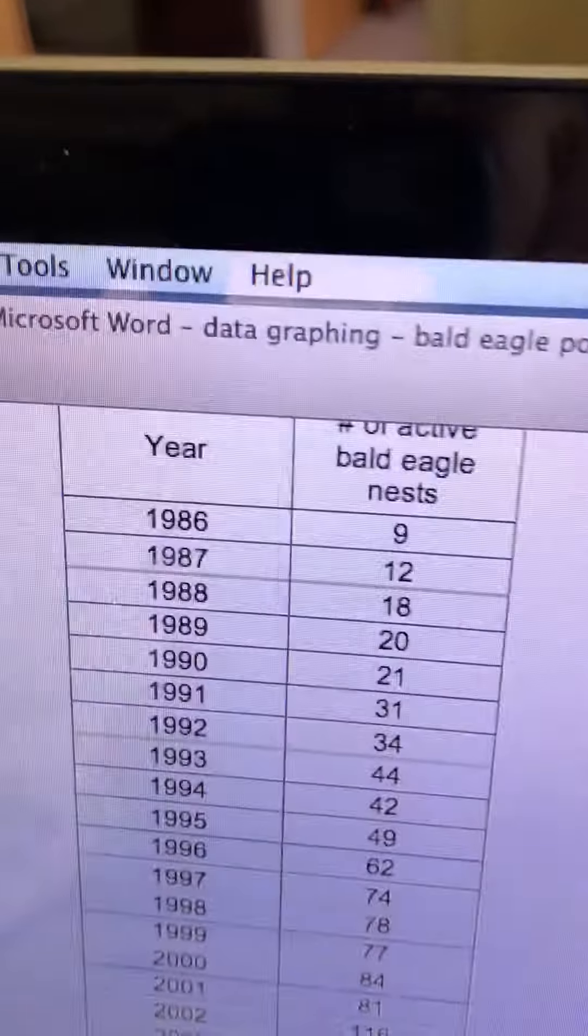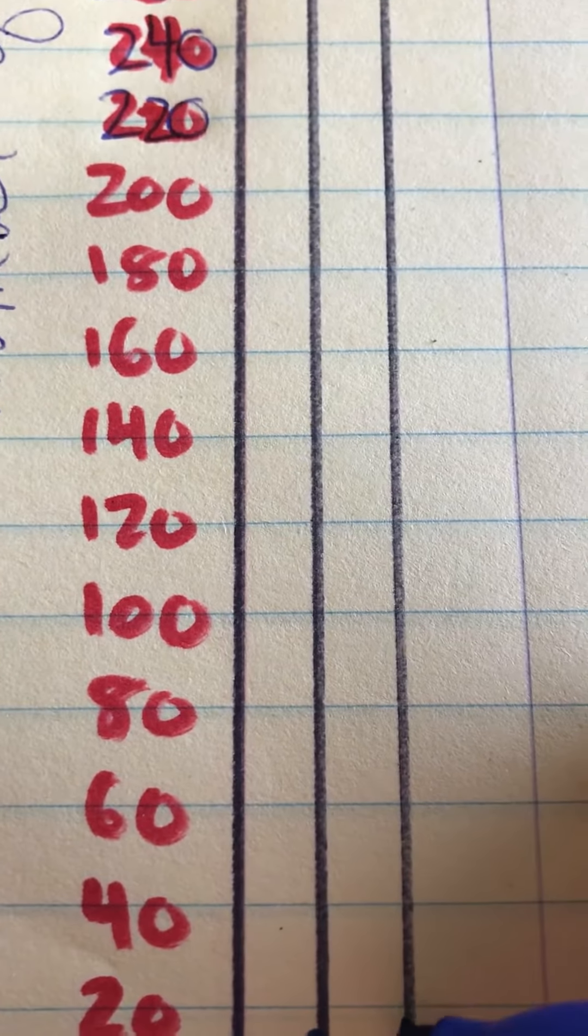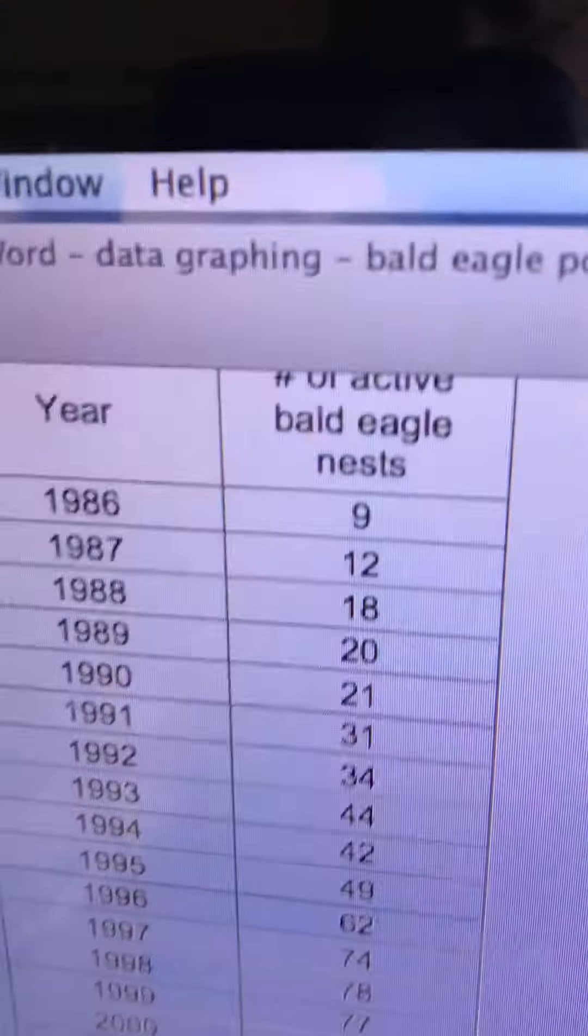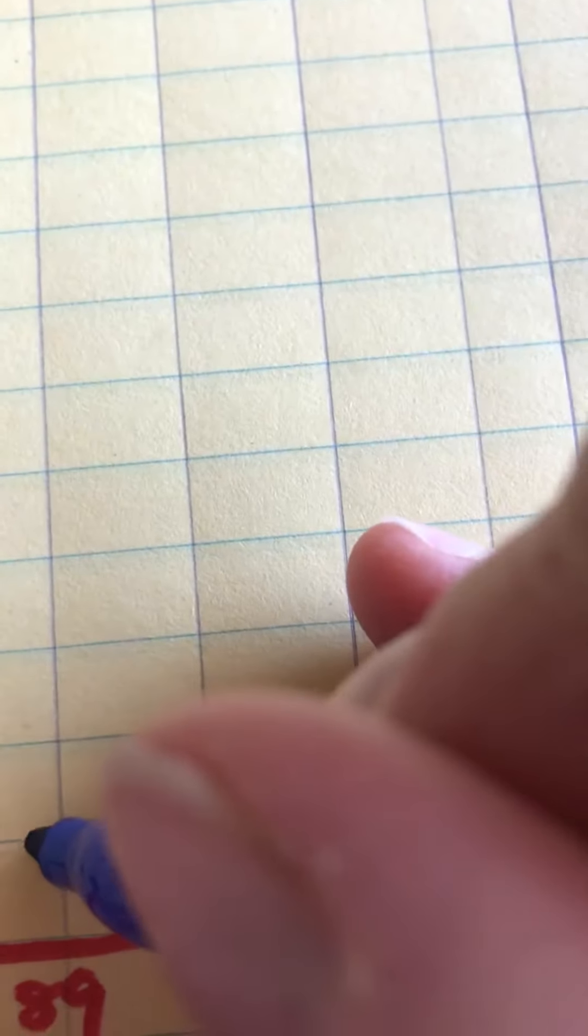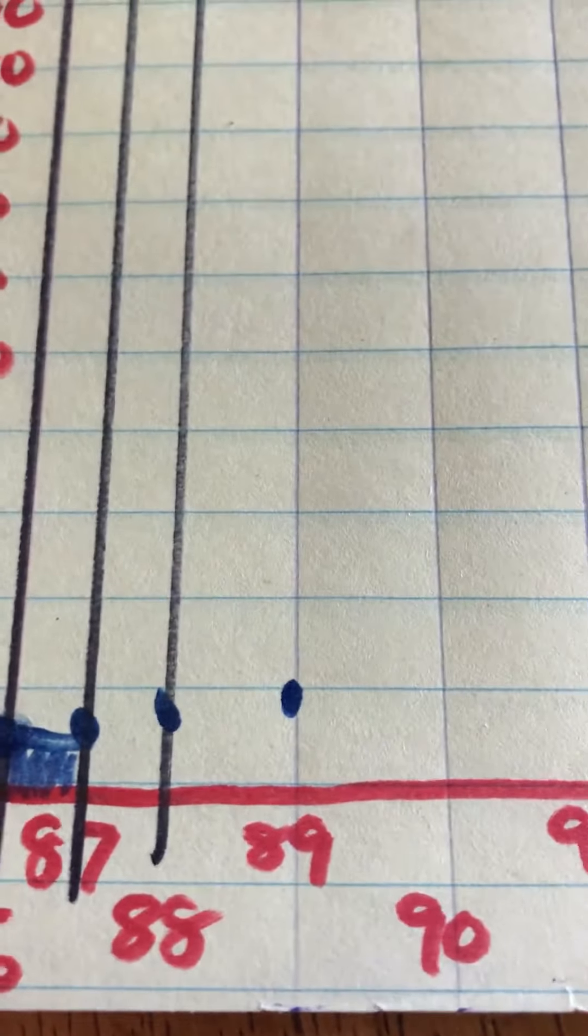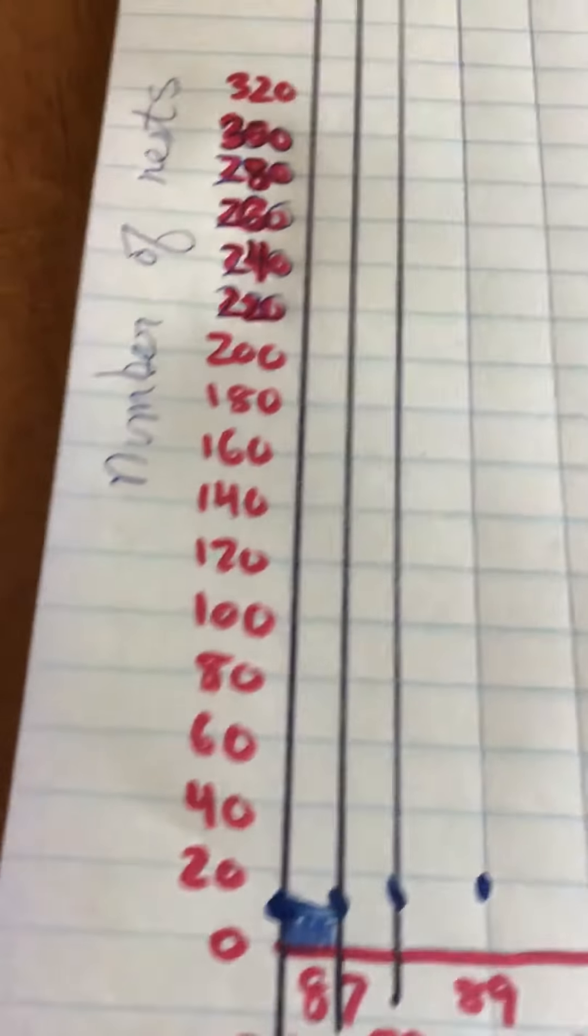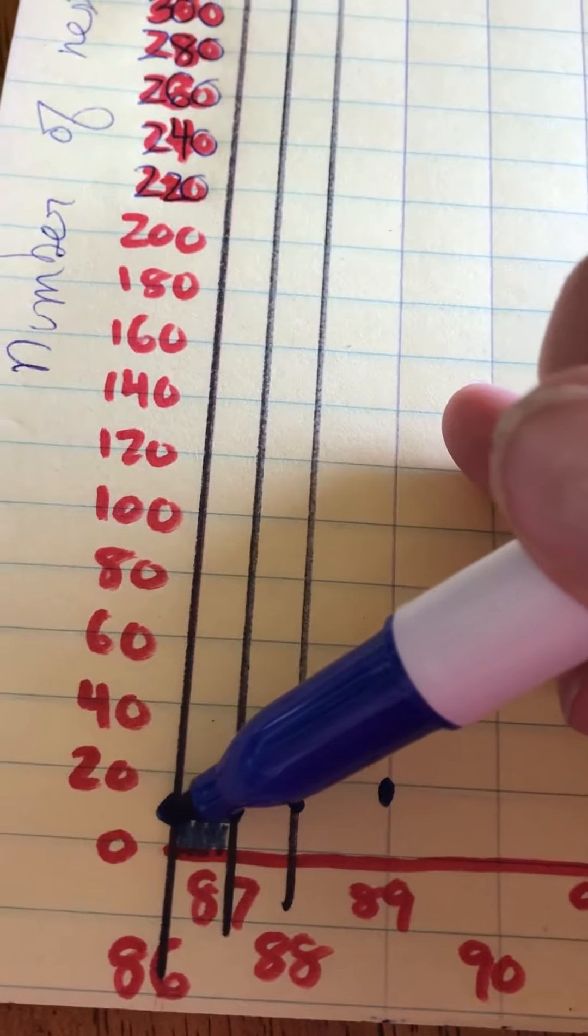All right. For 1988, 18. So we're almost up to 20 now. 1989, there were 20. So we can put a point right at 20. Now, when you're all done with your points, and there will be lots of points, then you can use your ruler if you like to, or you can just connect them with your pen.